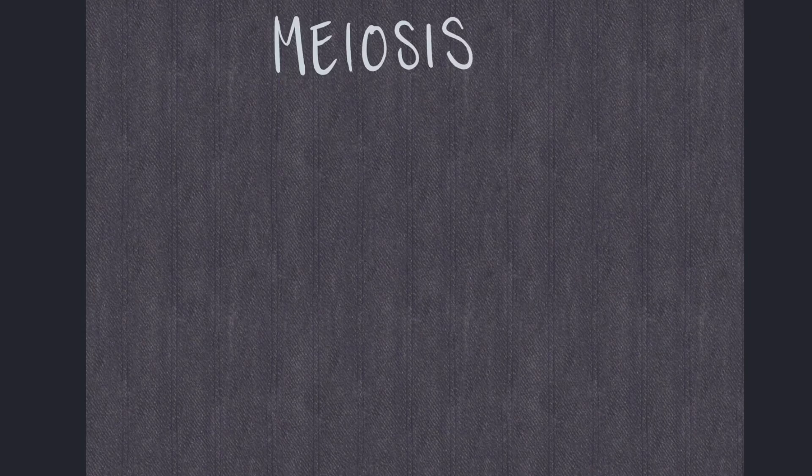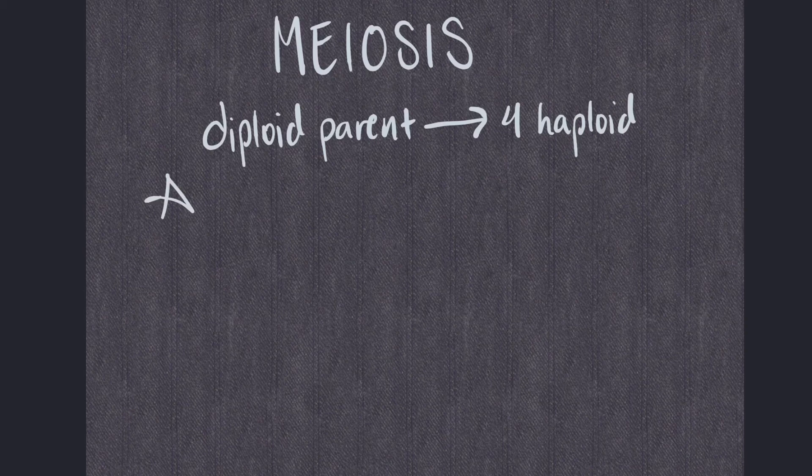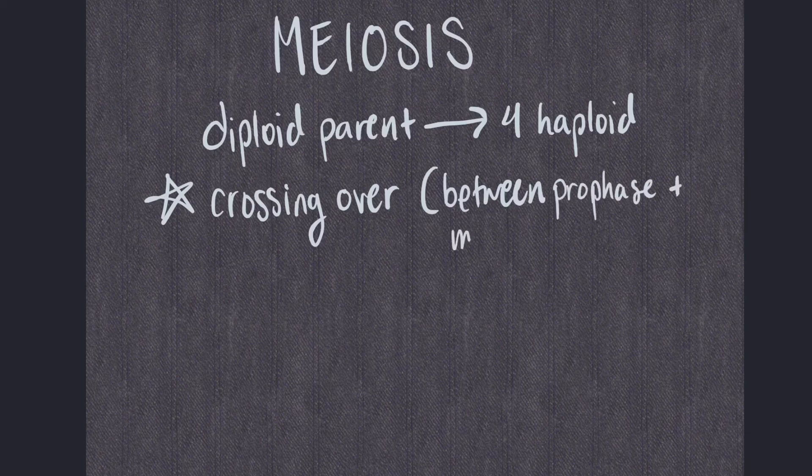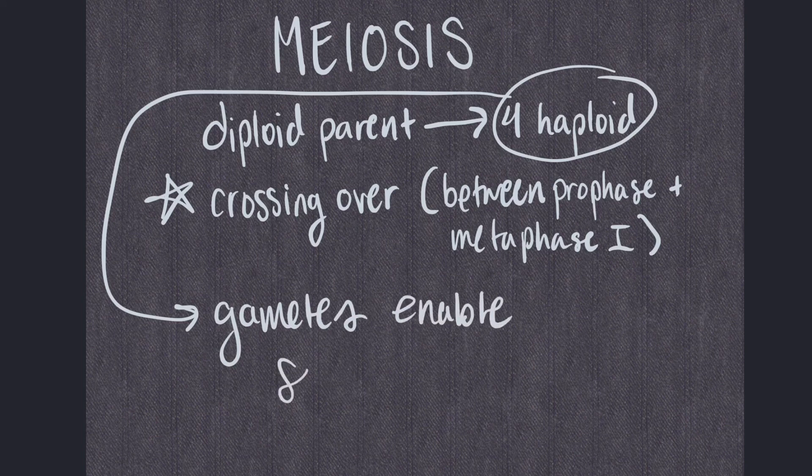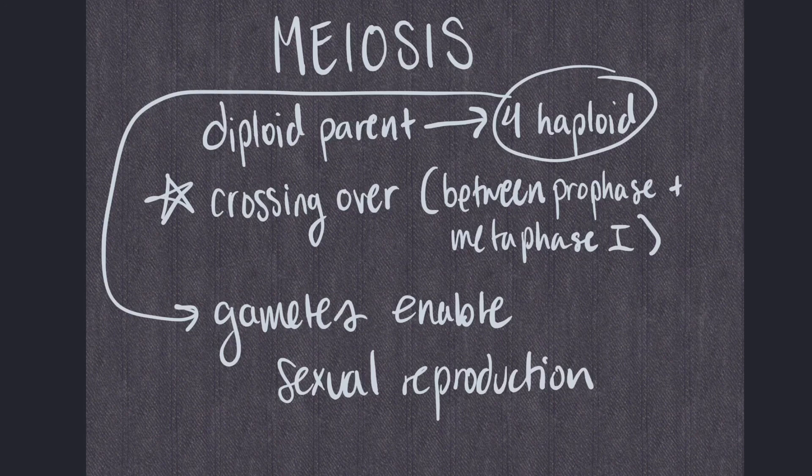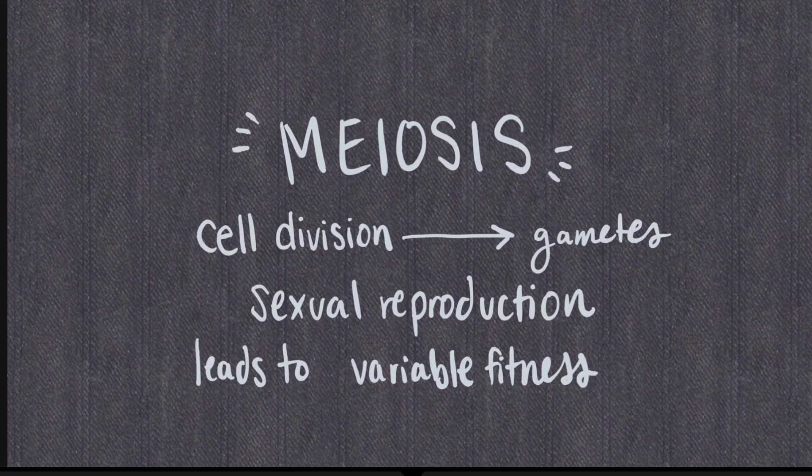In summary, meiosis is a cellular process in which a diploid parent cell divides into four haploid daughter cells. One very important event in meiosis is crossing over, which occurs between prophase and metaphase I. Crossing over increases genetic variation. The haploid cells produced through meiosis are otherwise known as gametes. Gametes can combine during sexual reproduction, which also increases genetic diversity. Genetic diversity results in variable fitness, which enhances the chances of survival for the next generation of organisms.